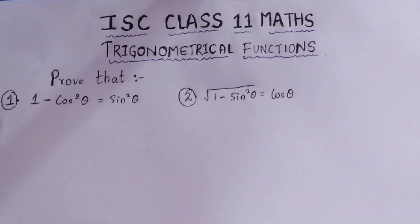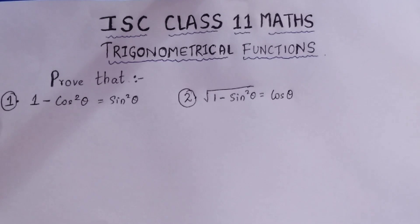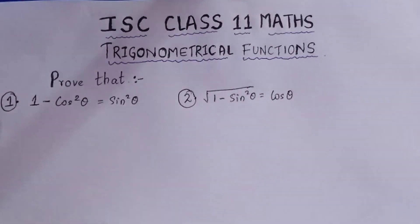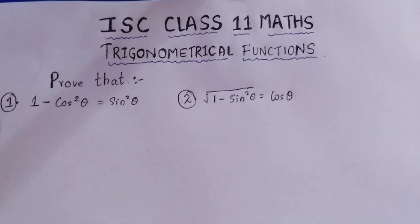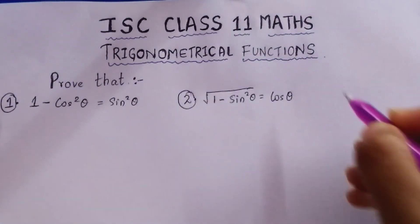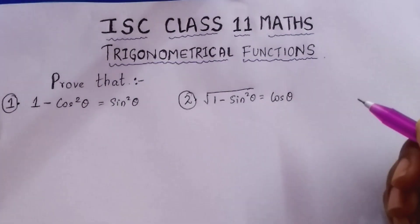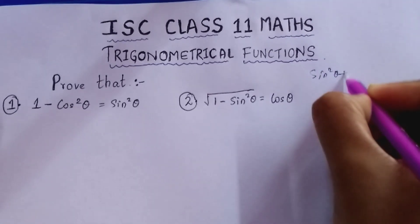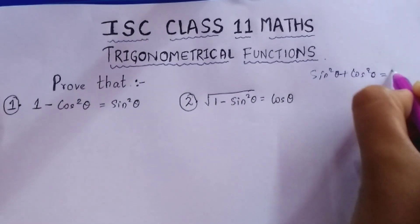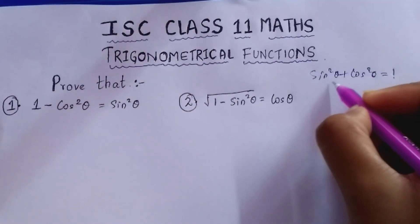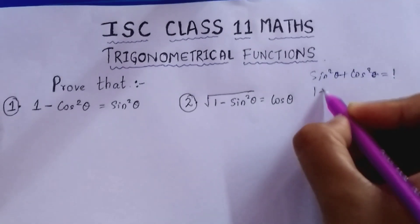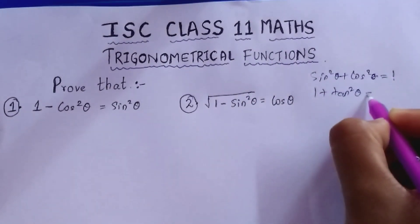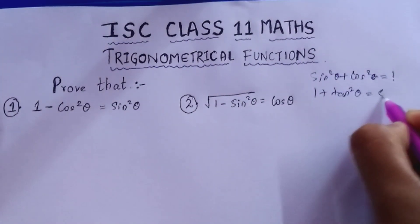All the questions I am going to solve are from the first exercise of Chapter 4, that is Exercise 4a. For this exercise, the formulas you have to remember are the simple ones you have also done in Class 10: sin²θ + cos²θ = 1, and 1 + tan²θ = sec²θ.